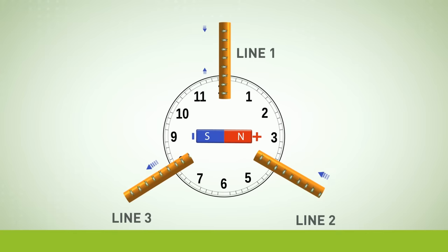At three o'clock, the magnet is perpendicular to line one, so electrons stop moving, but line two is affected by the north pole, and line three is affected by the south pole, so current is flowing in lines two and three.